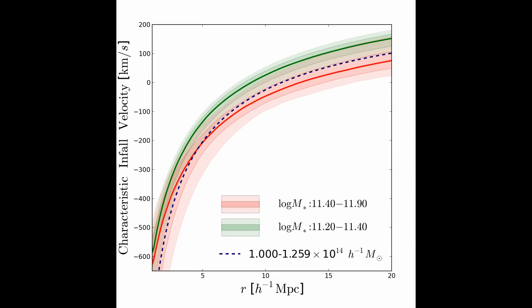As a proof of concept, we applied the model to ξ_cgs measured for two samples of Sloan groups binned by their BCG stellar mass estimates.